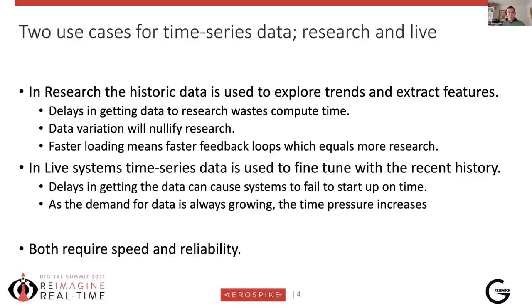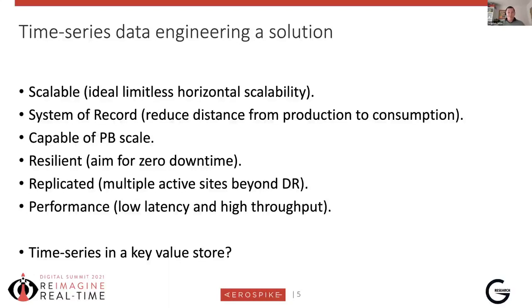We wanted a system that could handle this and whatever the future would bring. The aim was to build a system with limitless horizontal scalability, to act as a system of record to reduce the distance from data production to consumption. We wanted petabyte scale — the system cannot hit a wall. It needs to be resilient with zero downtime. With exchanges and markets wanting systems on all the time, we wanted active-active replication across multiple sites globally, not just DR capabilities. And on performance, we needed both low latency and high throughput.